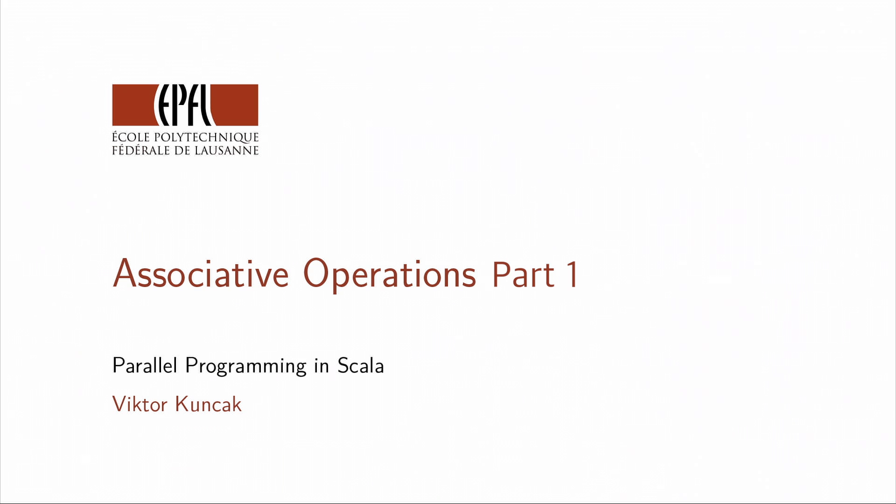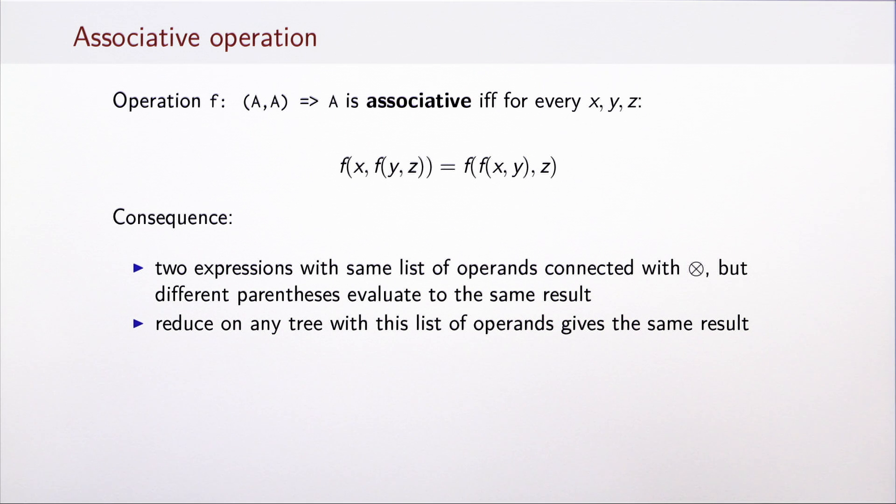Let's examine some more associative operations. We have seen the definition of associativity as well as the consequence that for associative operations, two expressions with the same list of operands will evaluate to the same result regardless of the parentheses that we insert. In terms of reduce and parallel reduce, this means that regardless of the shape of the tree, if the list of operands is the same we get the same result. But to make these observations useful, we need to have examples of relevant associative operations.